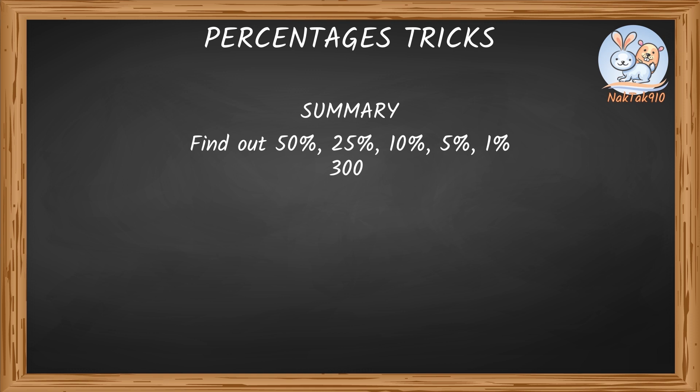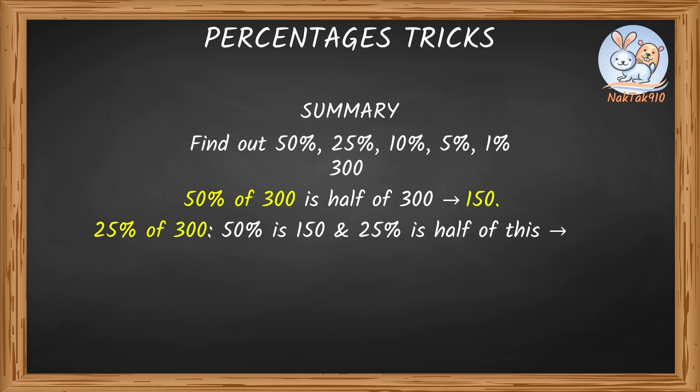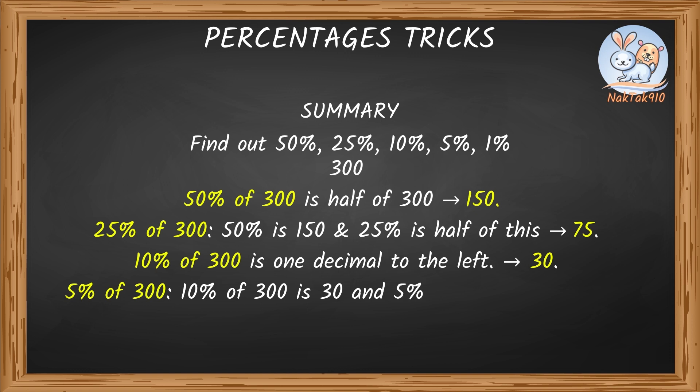300. 50% of 300 is half of 300. That's 150. 25% of 300, 50% is 150, and 25% is half of this. That's 75. 10% of 300 is one decimal to the left. That's 30. 5% of 300, 10% of 300 is 30, and 5% would be half of this. That's 15.